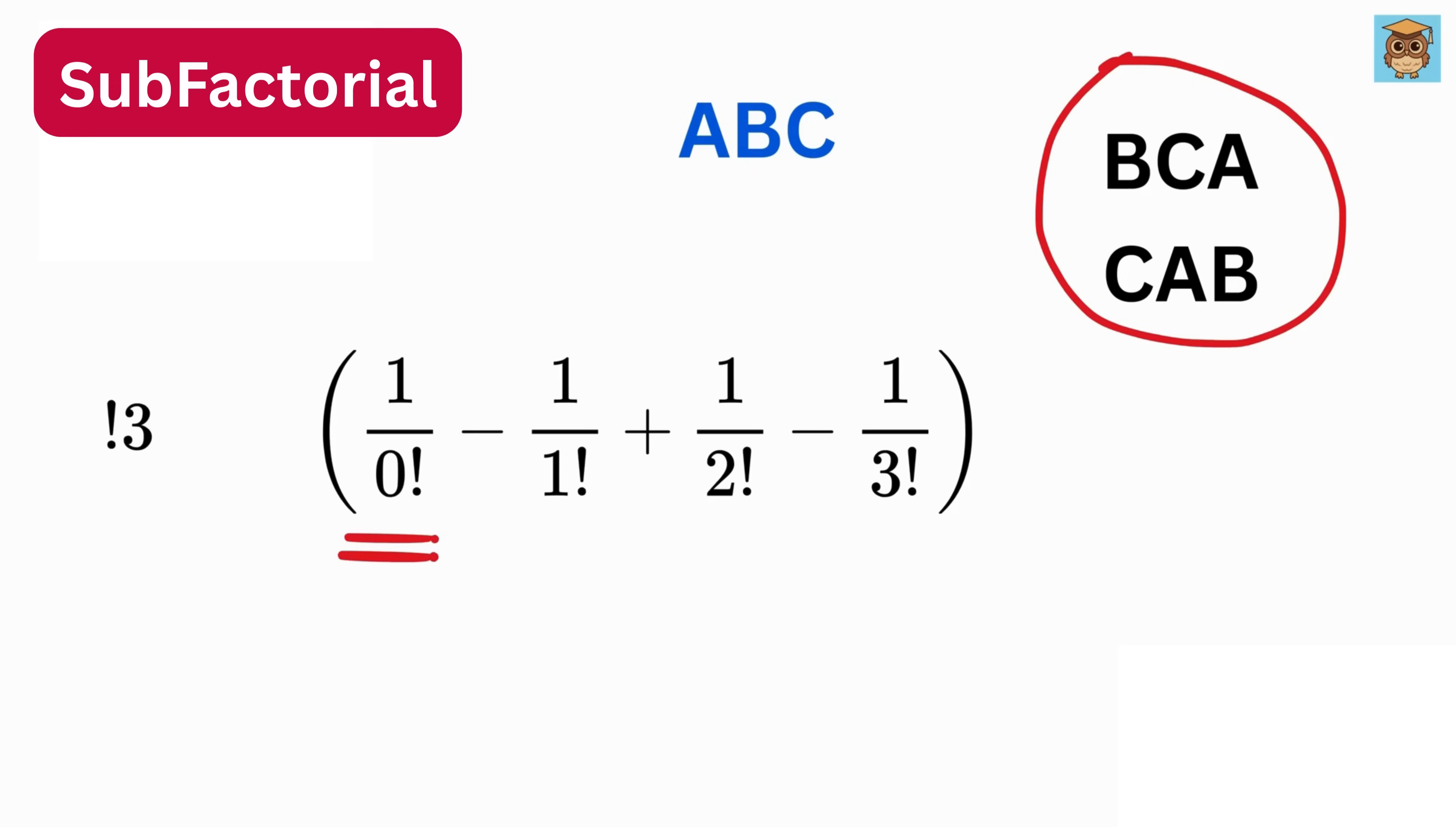1 over 0 factorial is 1. 1 over 1 factorial is 1. 1 over 2 factorial is 1 divided by 2. 1 over 3 factorial is 1 divided by 6. 1 minus 1 is 0. Then 1 divided by 2 minus 1 divided by 6 gives us 1 divided by 3.